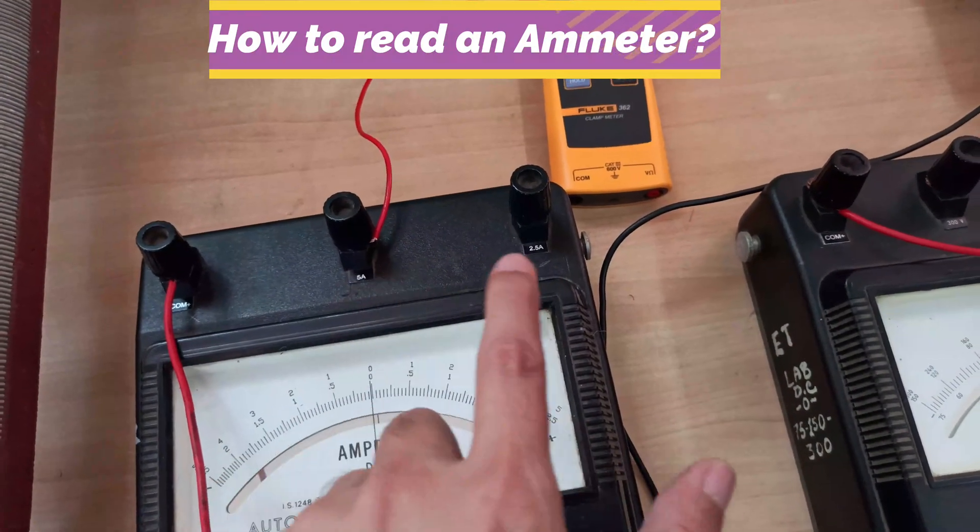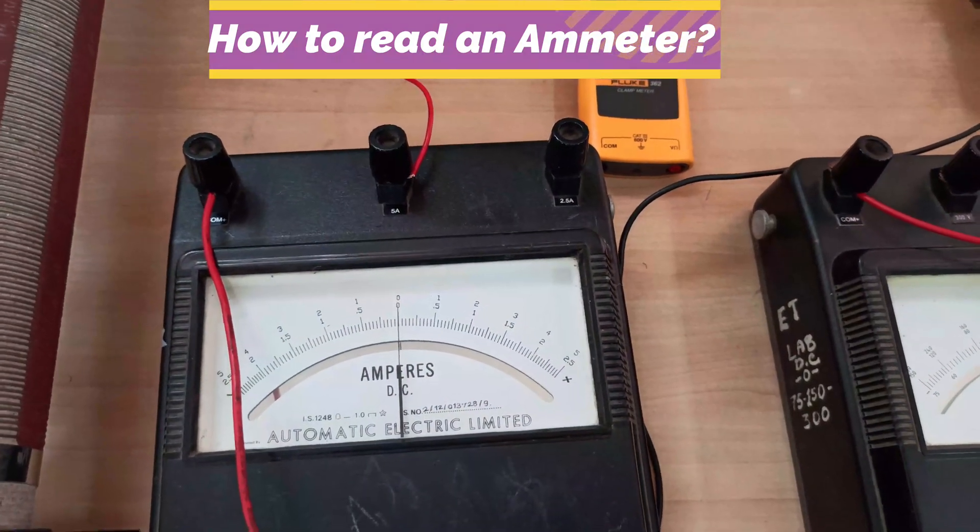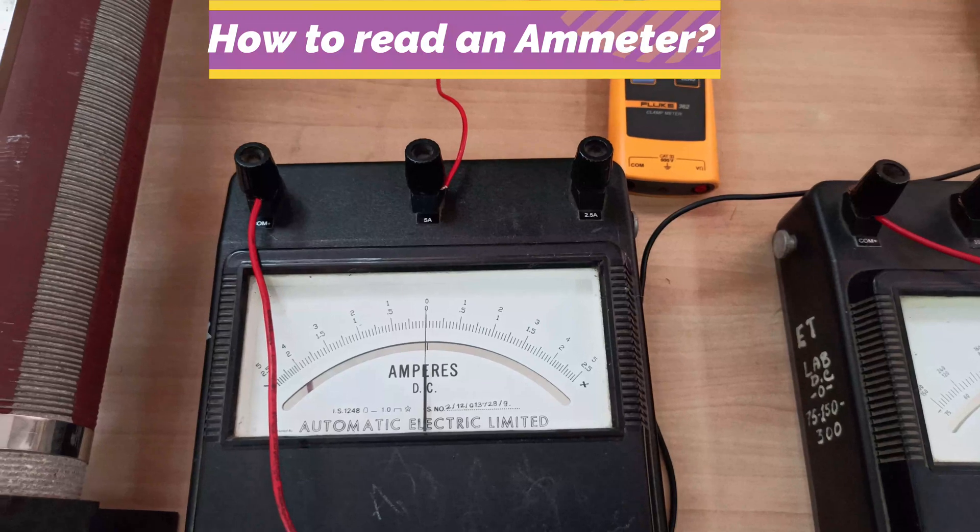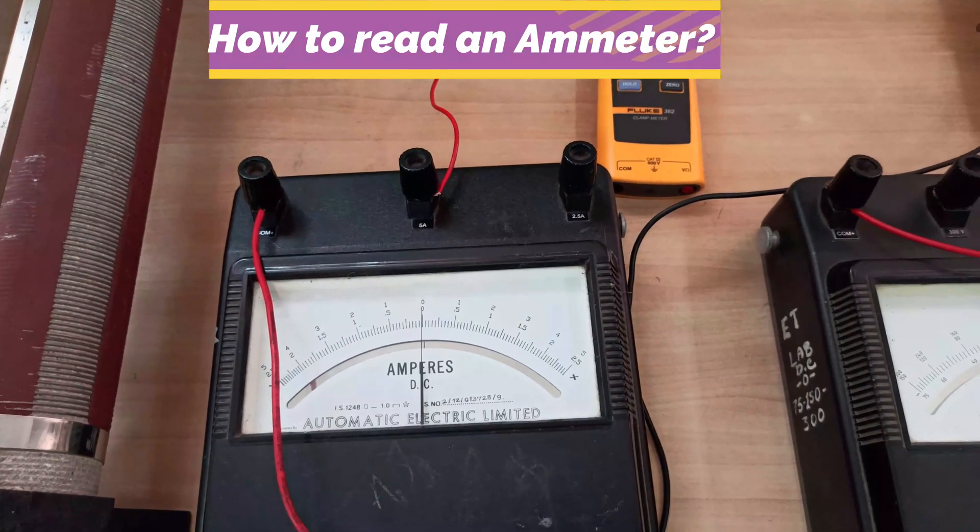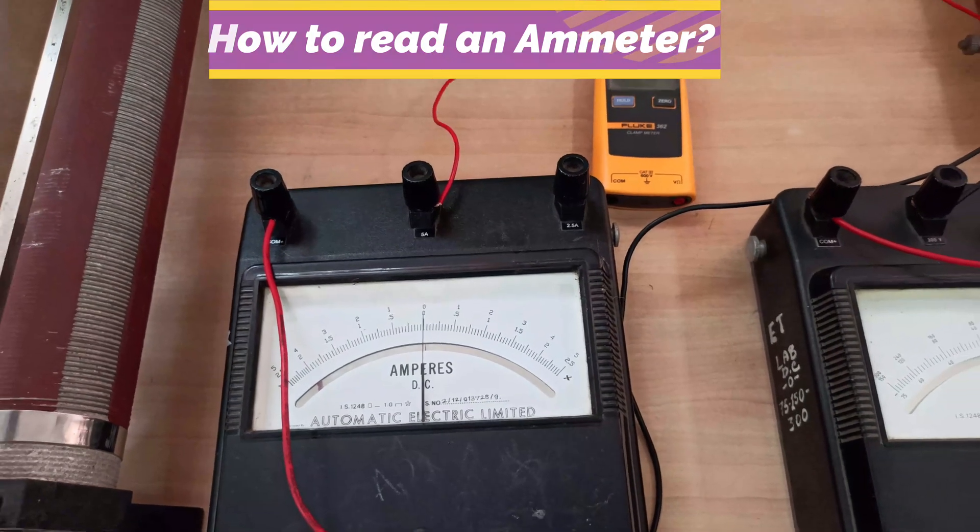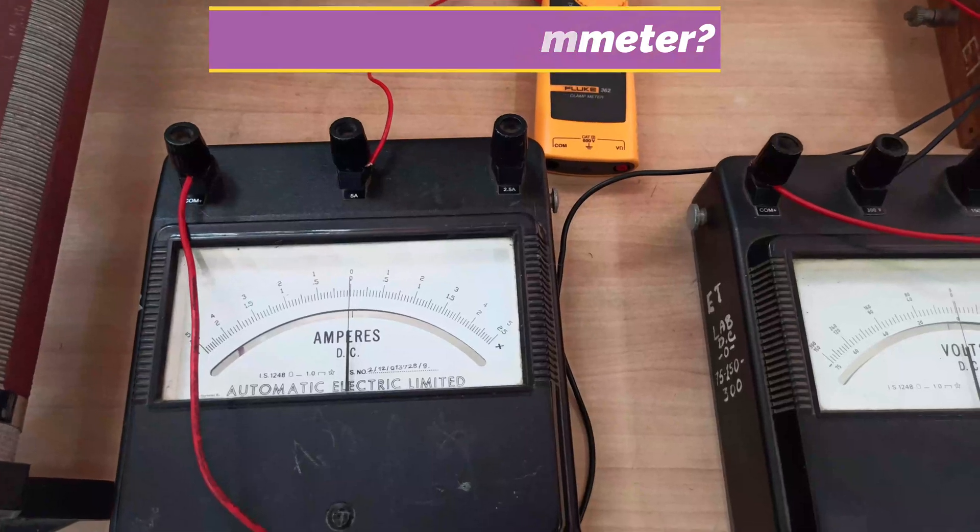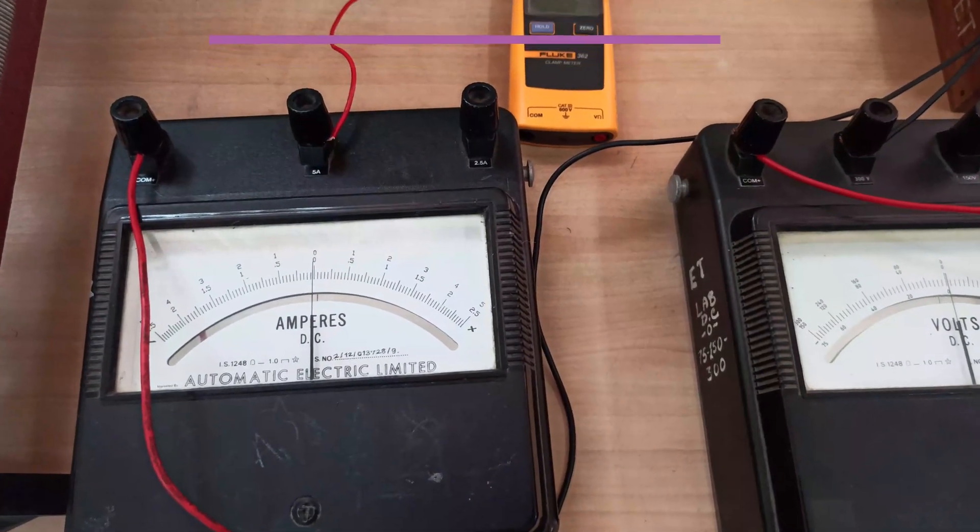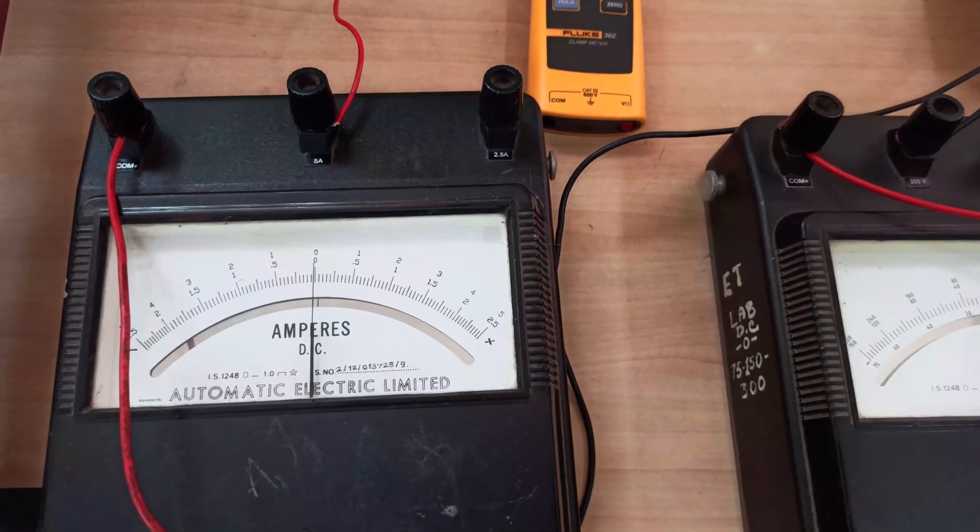So how to know which range to select? That will be given in the manual, or otherwise you can also determine. Whatever instrument and rheostat you are using in your circuit arrangement, try to get an idea what could be the maximum current that is going to flow through your ammeter, and from that you decide.